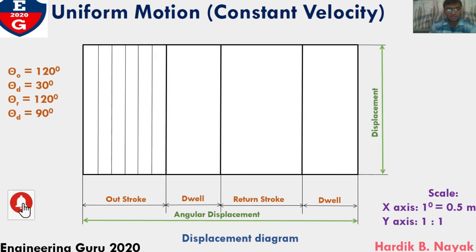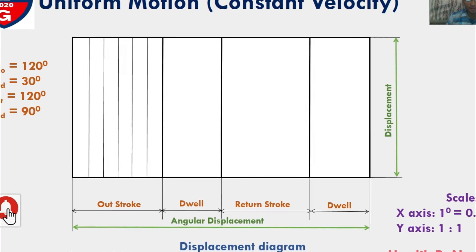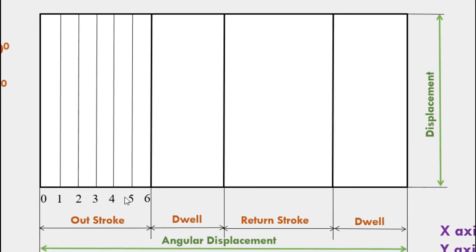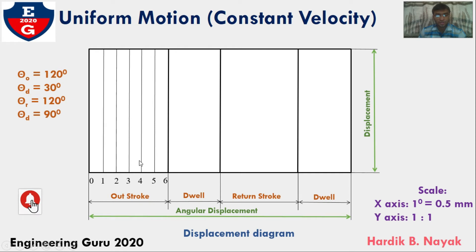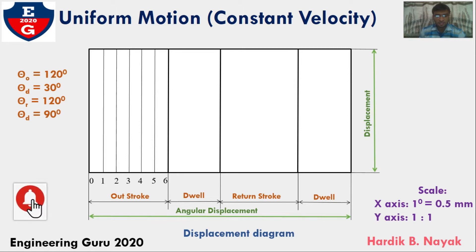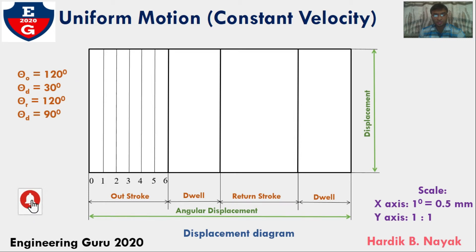Next, divide this outstroke into 6 equal parts and give notation from 0, 1, 2, 3, 4, 5, and 6. Draw projected vertical lines through all points. After the outstroke, the angle turned by the cam is 120 degrees; during outstroke the follower would reach its maximum position. After this there would be a dwell — the follower remains raised.